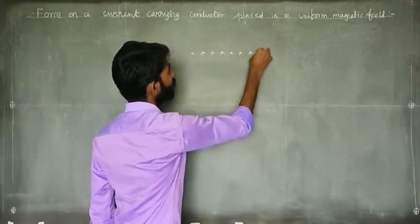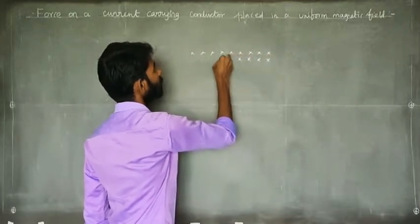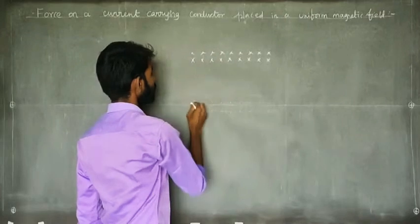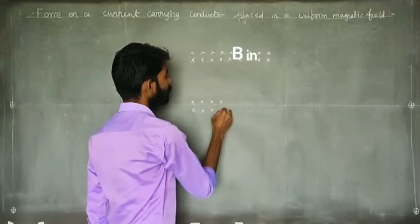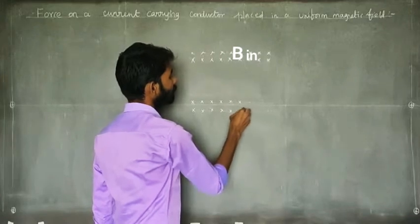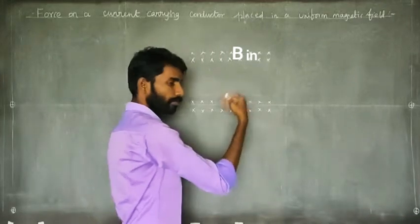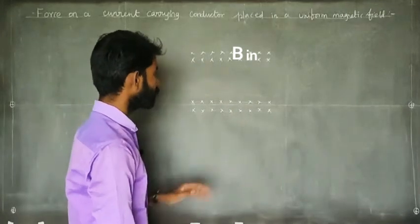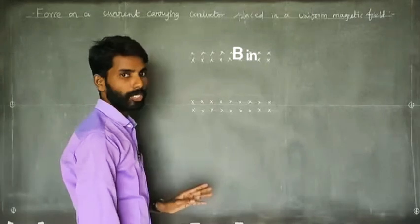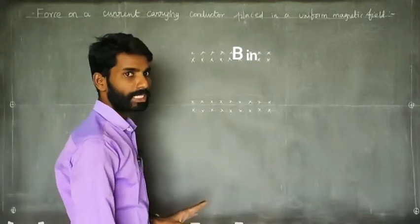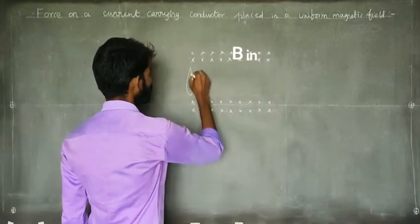The magnetic field direction — we want to make this cross notation. The magnetic field is perpendicular to the plane of the board. We use this notation when the magnetic field is perpendicular to the plane of the board. So let's set up this conductor — suppose this is the conductor.